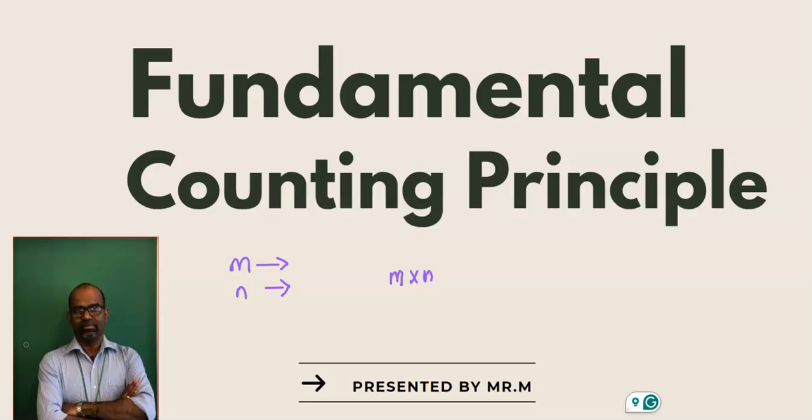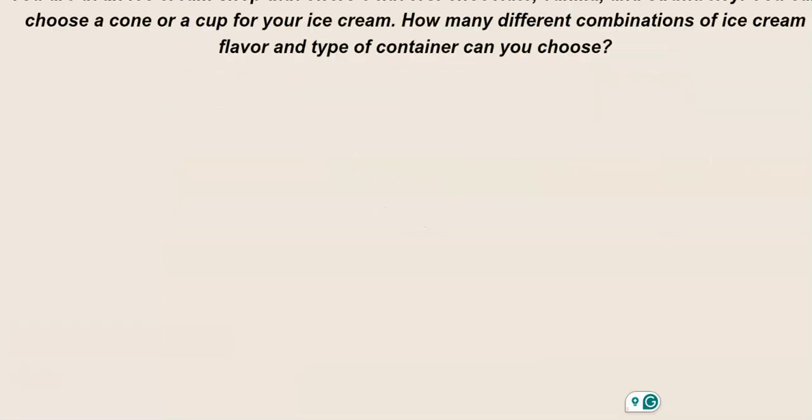This is actually the basic principle and it is a very useful principle you can use for estimation problems. The principle states that if there are m ways to do one item and n ways to do another item, then we have m times n ways to do both of them together.